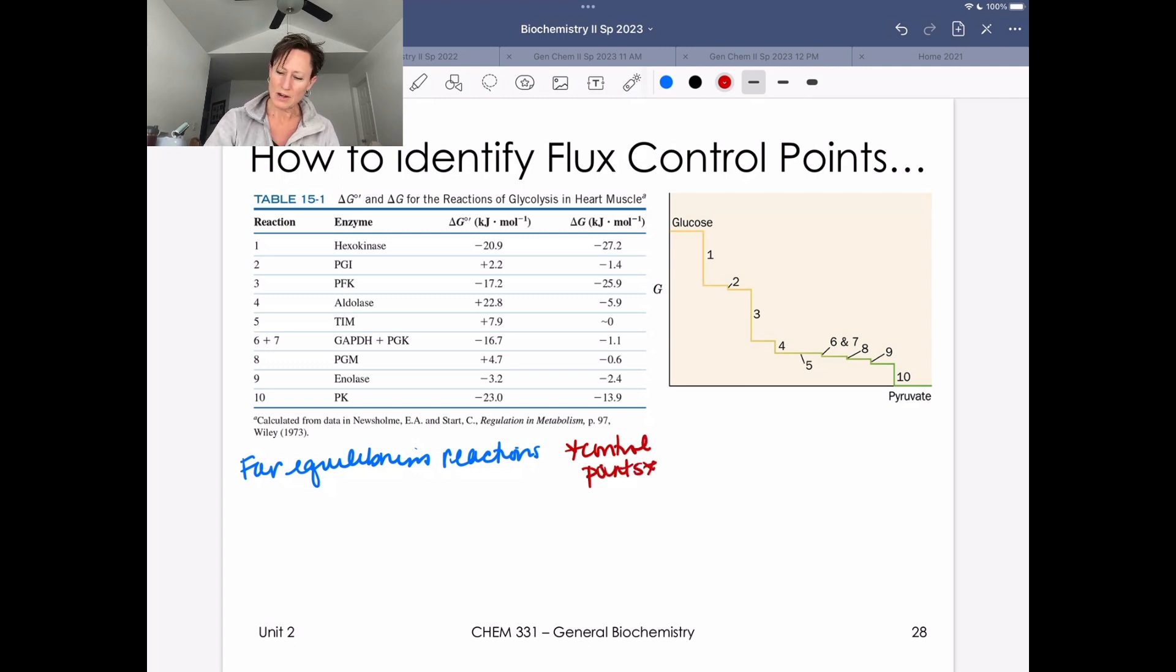So far equilibrium reactions, these are going to be what we want to have for control points. And remembering, a far equilibrium reaction is one that is going to have a large negative delta G.